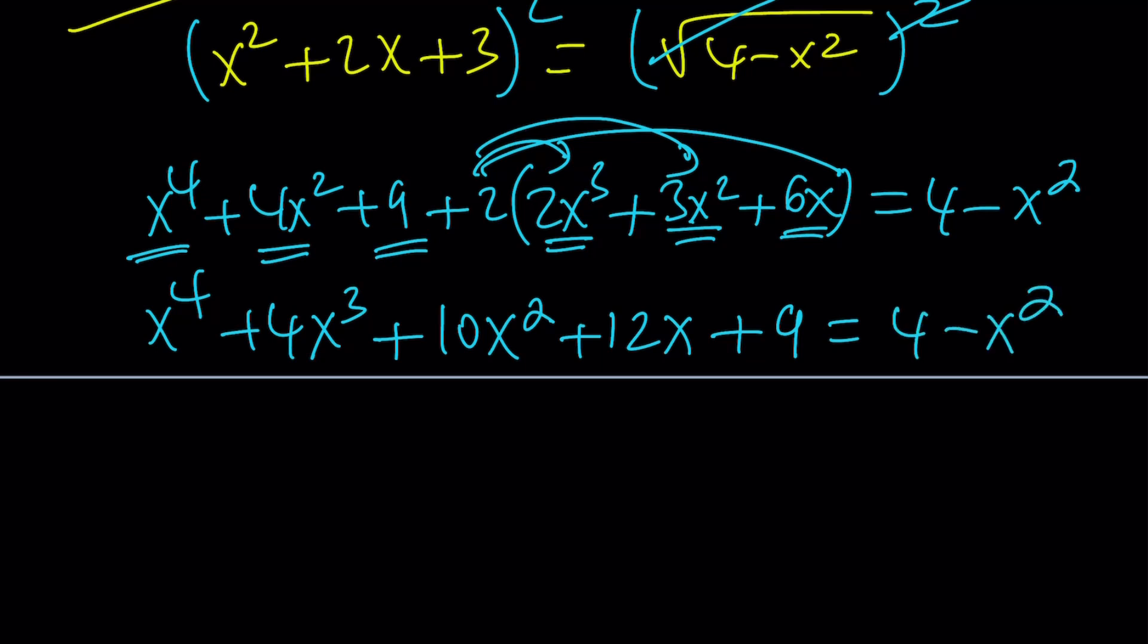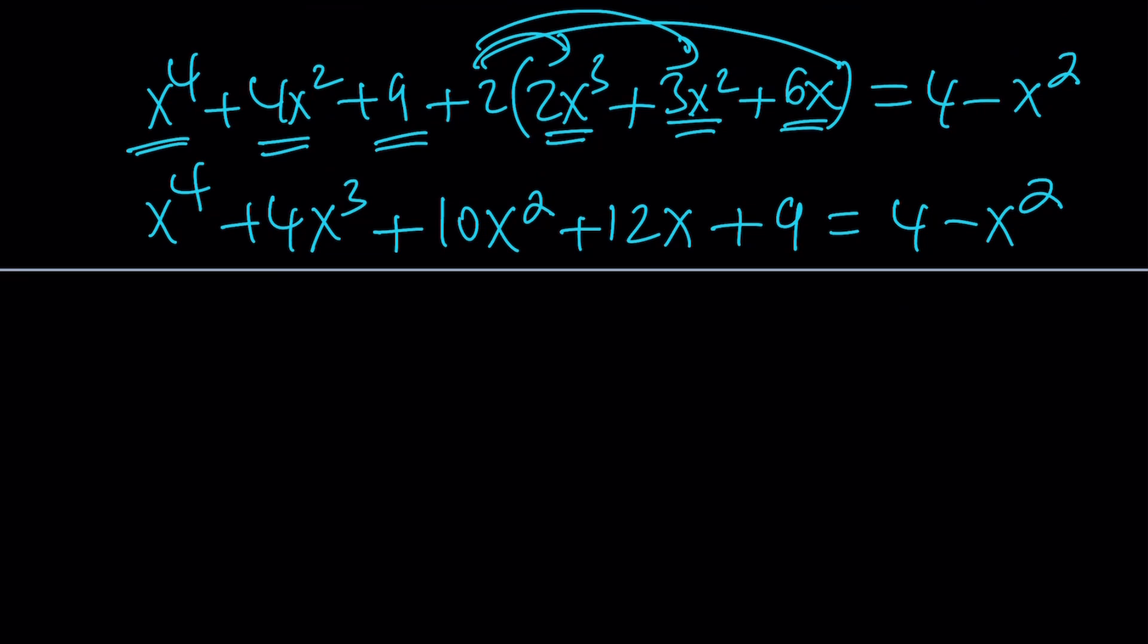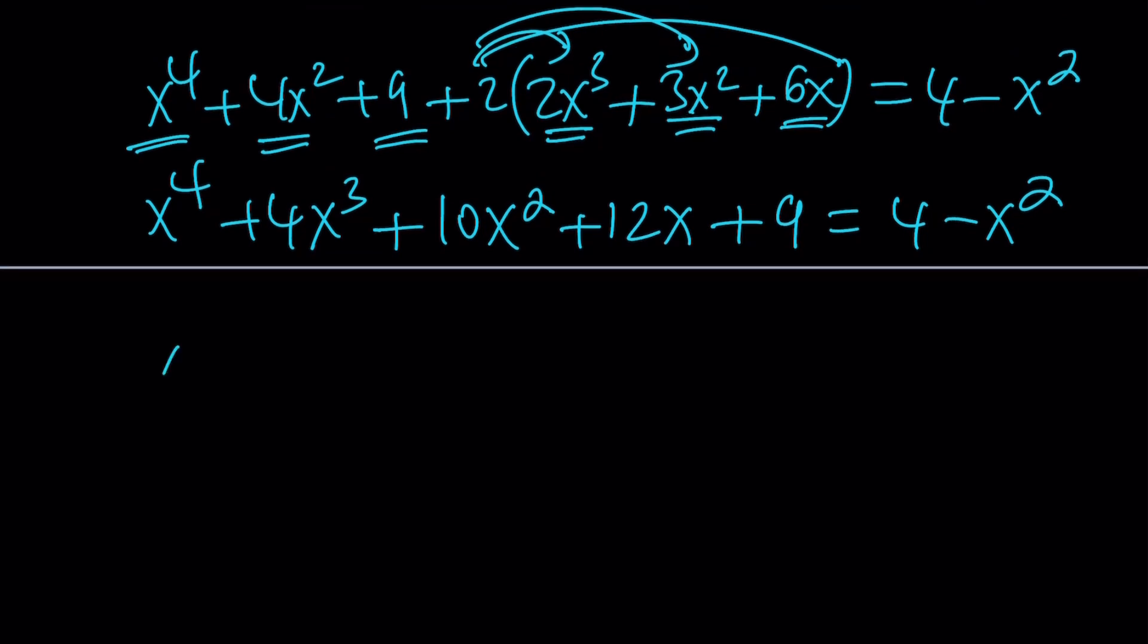So we get a quartic equation. And then let's put everything on the same side. x to the fourth plus 4x cubed. Now we're going to bring in a positive x squared. So that's going to make, make no mistake about it, you're not going to subtract. You're going to add. That's one of the typical mistakes people make. You have to do the opposite. And then plus 12x plus 9 minus 4. That's going to be a 5. And we got ourselves a nice quartic.